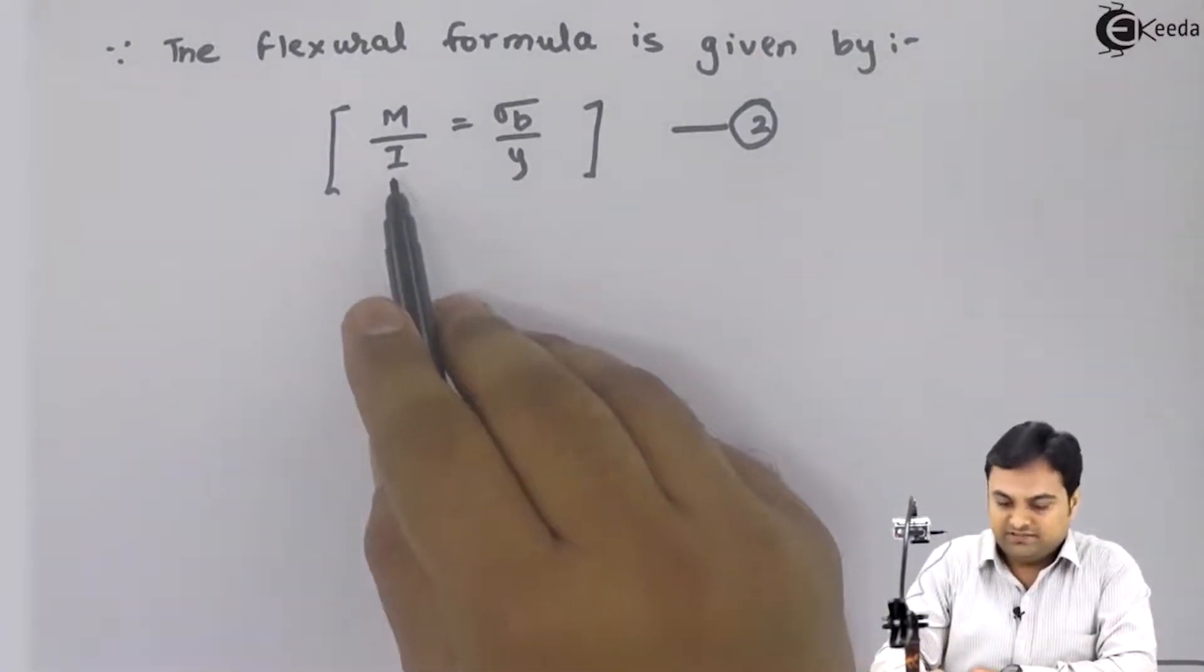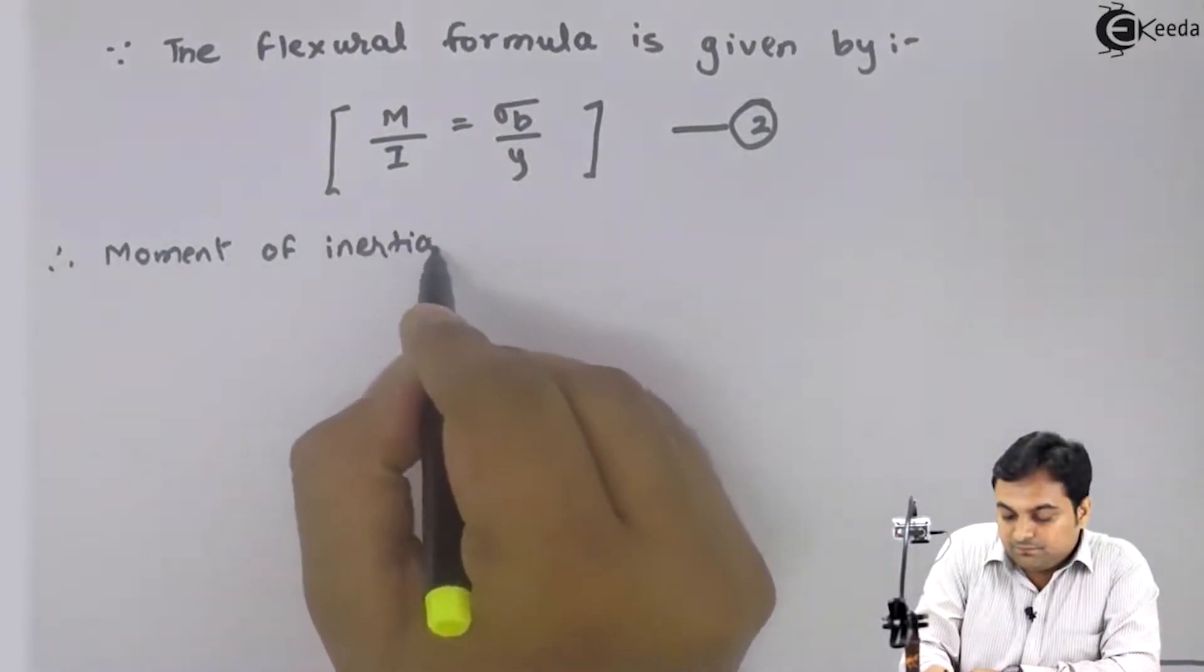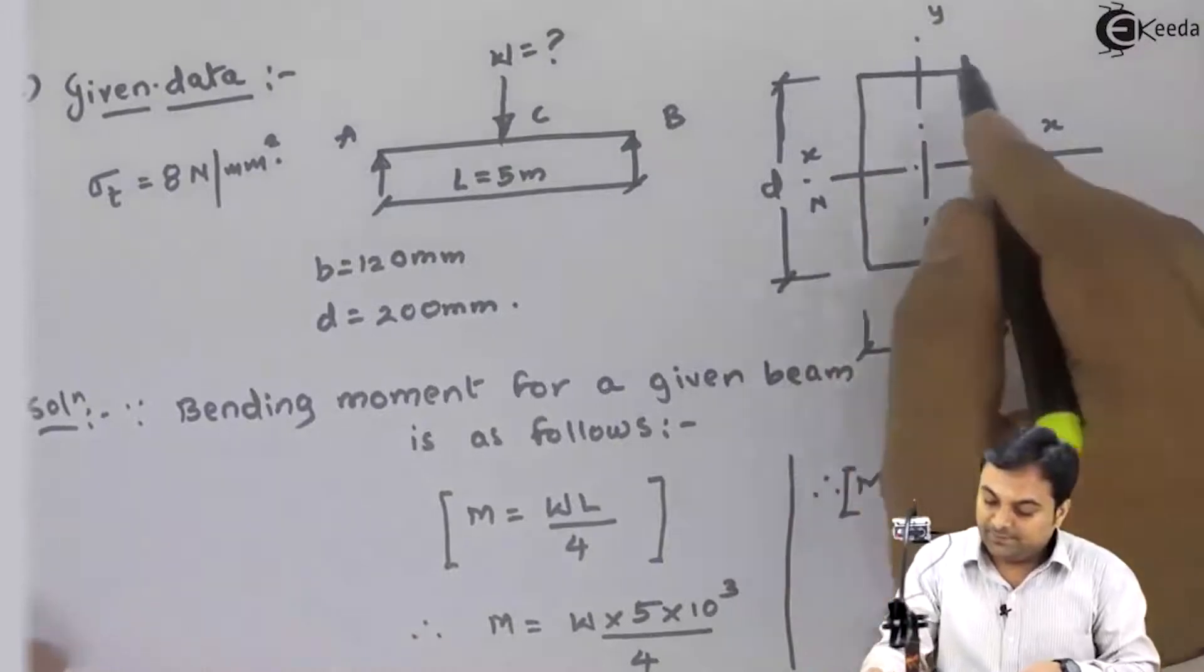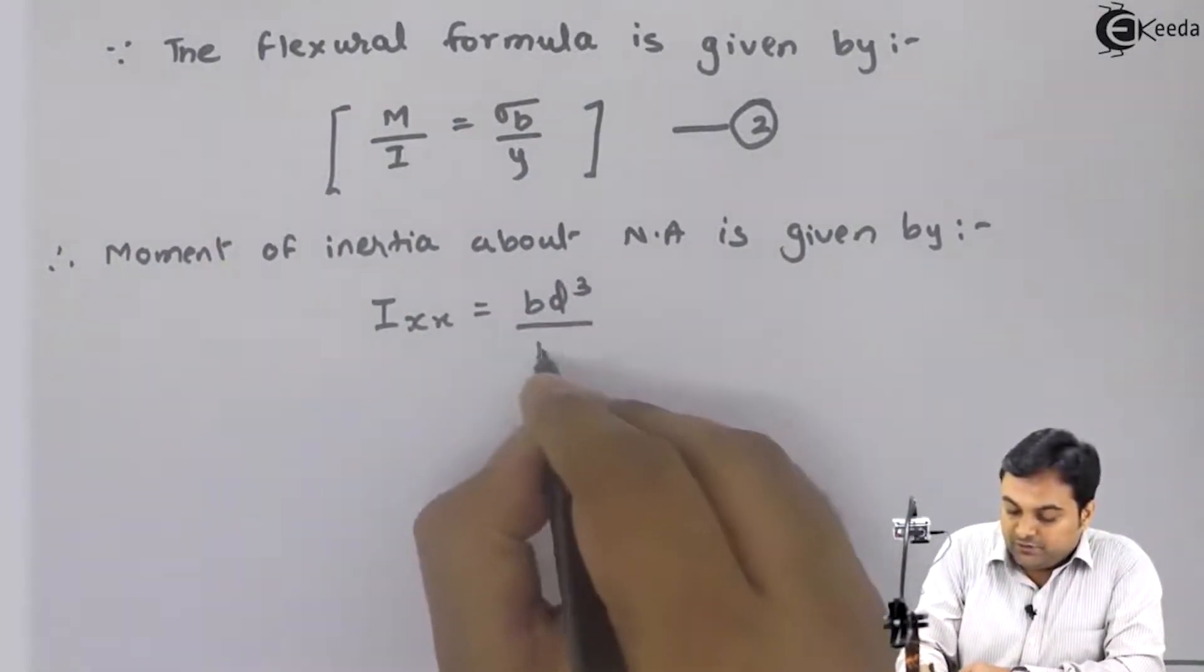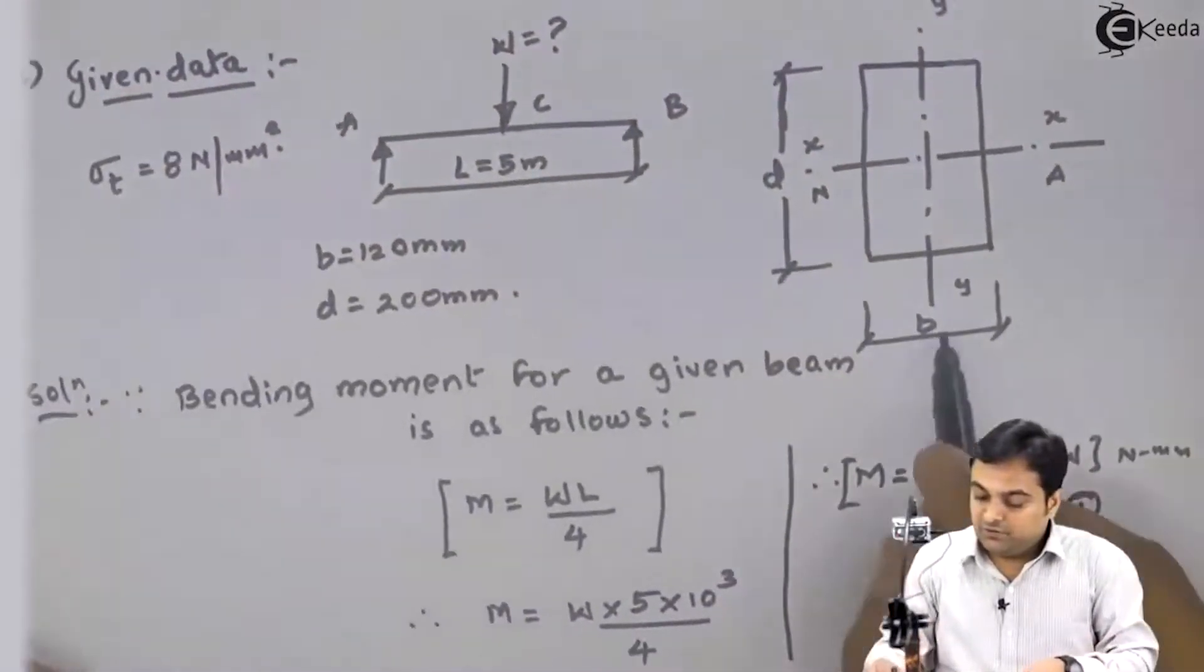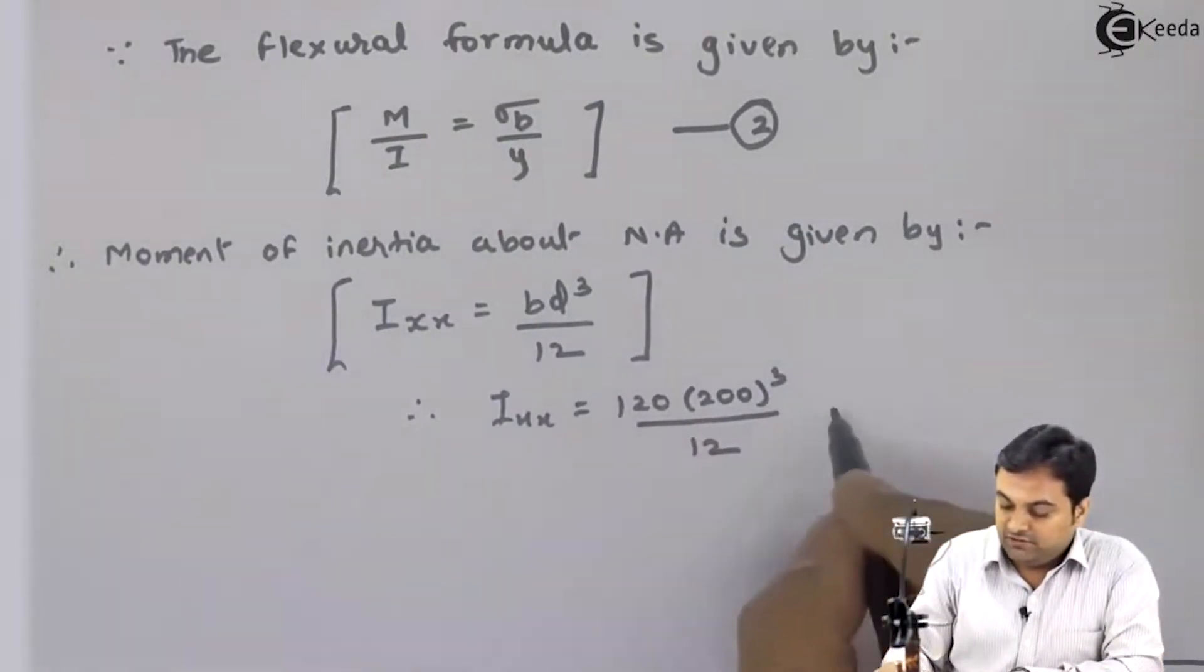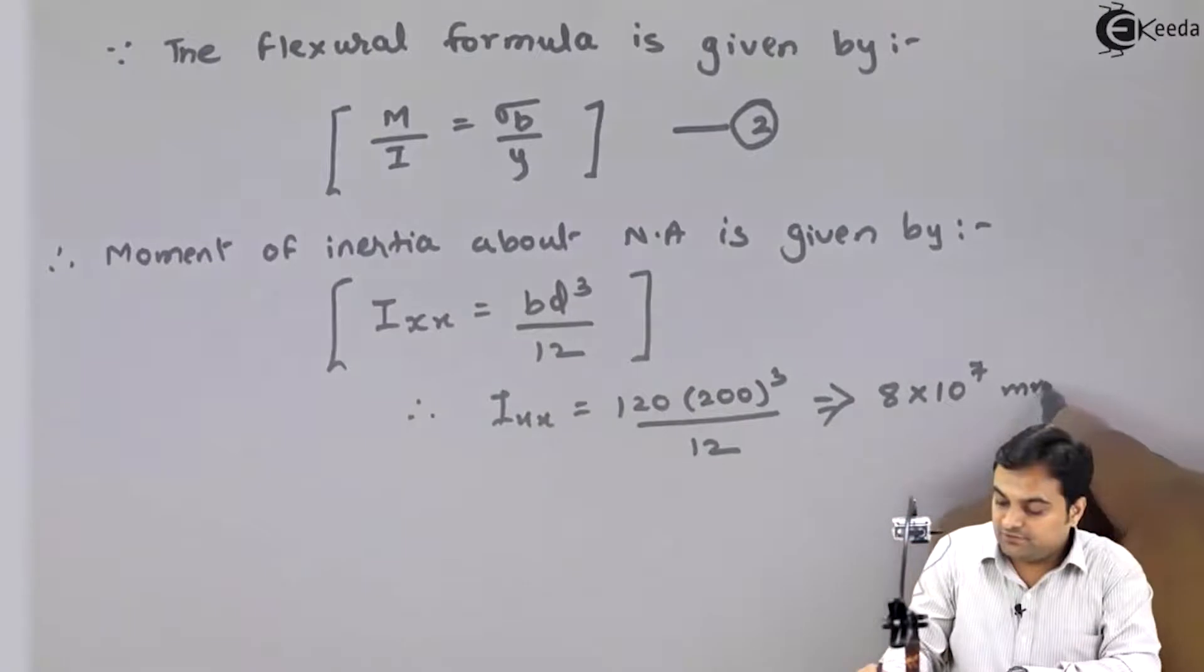Moment of inertia about neutral axis is given by I_xx is equal to bd³ divided by 12. For a rectangle, the neutral axis is your xx axis. Width of the rectangle is 120 mm and depth is 200. So b is 120, d is 200. If I calculate this carefully, my answer will be 8 × 10⁷ mm⁴.